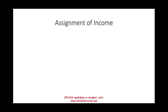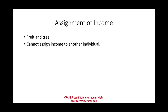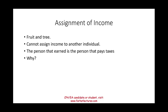We also need to understand the concept of assignment of income. Simply put: the fruit and the tree are connected — the fruit from the tree belongs to that tree. You cannot assign your income to another individual. The person who earned the income is the person who pays the taxes. If you could assign income, you could shift wages to a family member in a lower tax bracket — for example, to your child or parent. You can give them money, but you cannot direct your employer to cut the check to them.